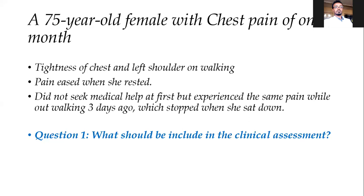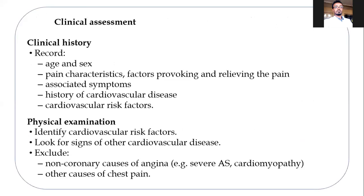If somebody presents with such history, the things to be included are: the age and sex of the patient, which are important in determining the pre-test probability or clinical likelihood of coronary artery disease; the pain characteristics and factors that provoke and relieve the pain; associated symptoms; history of cardiovascular disease; previous history of ischemic heart disease; and cardiovascular risk factors.